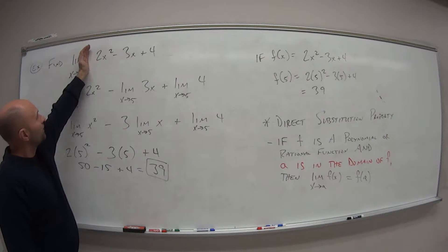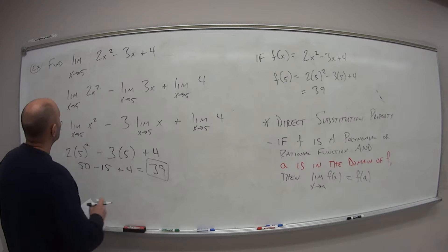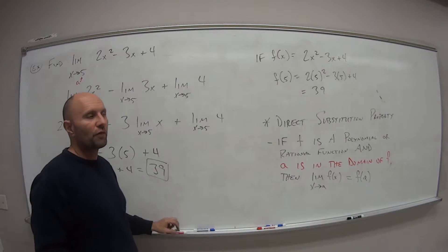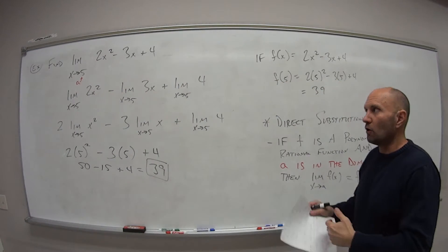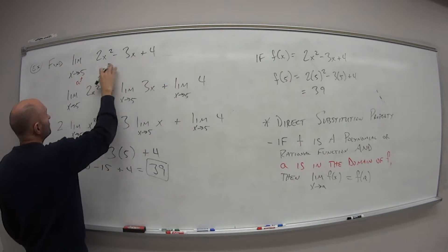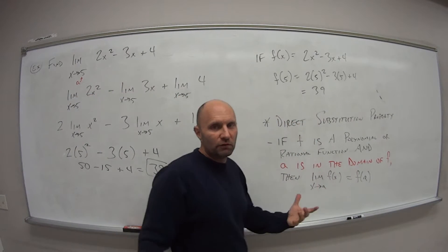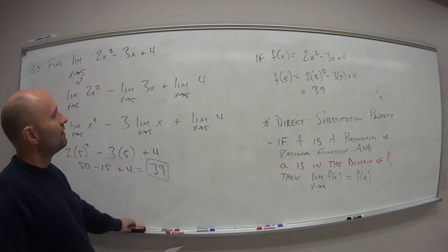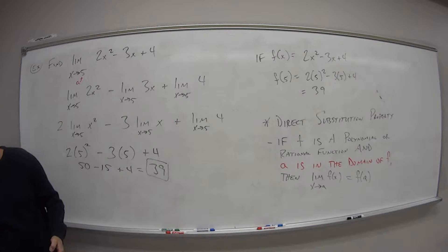...then the limit of f of x as x approaches a is just equal to f of a. And this applies to trig functions as well, so not just polynomials or rational functions, also trig functions. So let's look back here. Our function is this polynomial. Our a is 5. Is 5 within the domain of this function? Well, yeah, because a polynomial has what as its domain? All real numbers. So as long as this value a is in the domain of this function, you can just evaluate that function at that point, and that will give you the limit. So again, it's very restrictive based on that information, but it is possible sometimes just to plug that value in and crunch the numbers to see what you get.